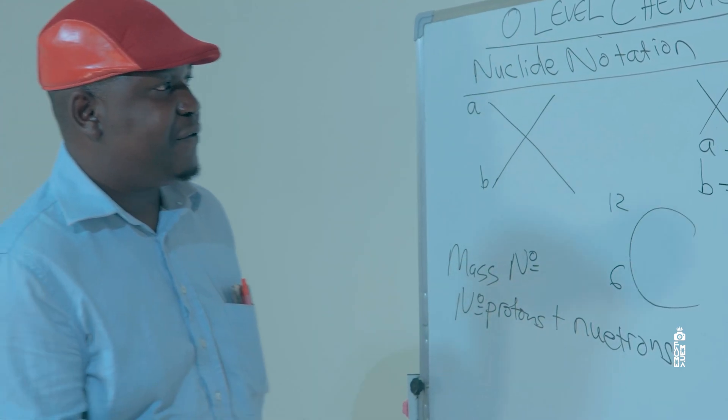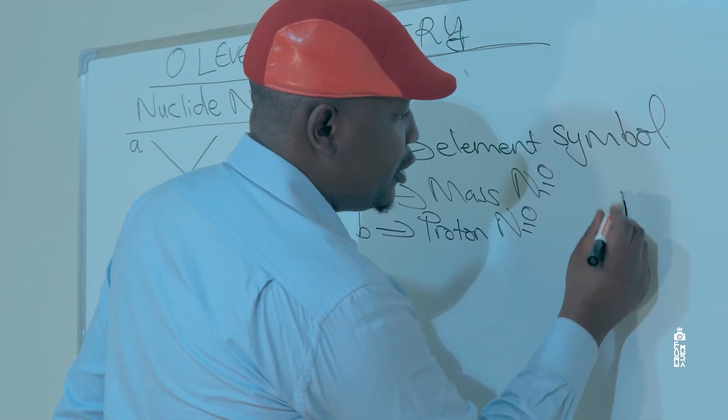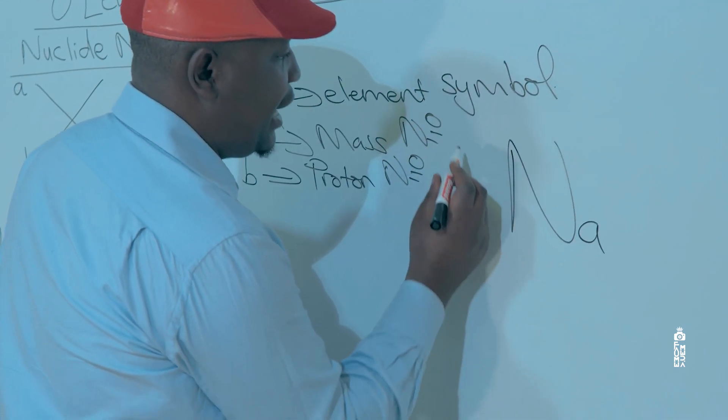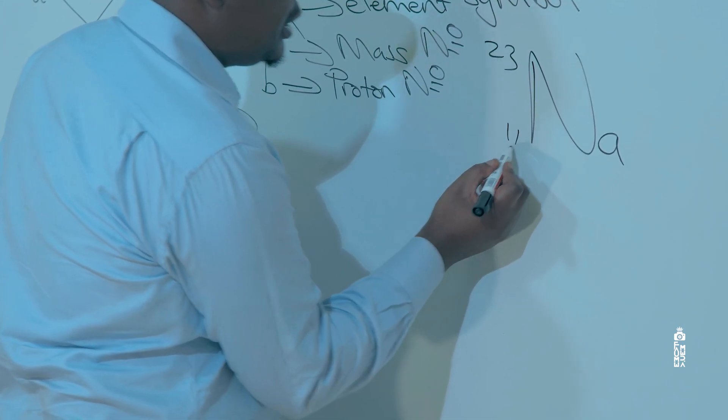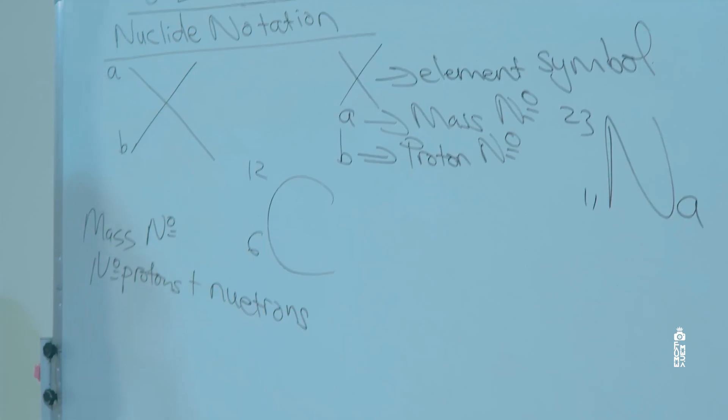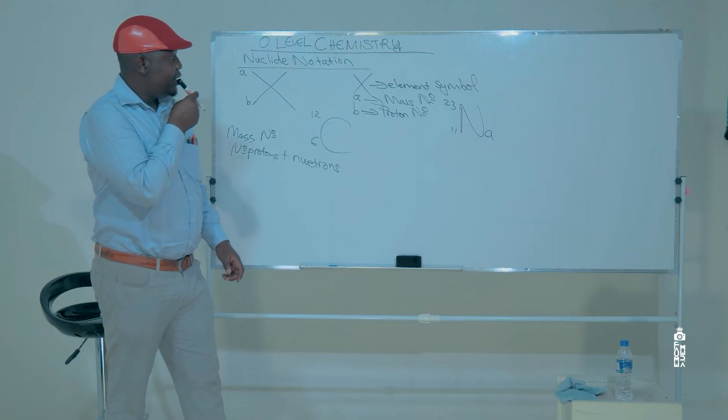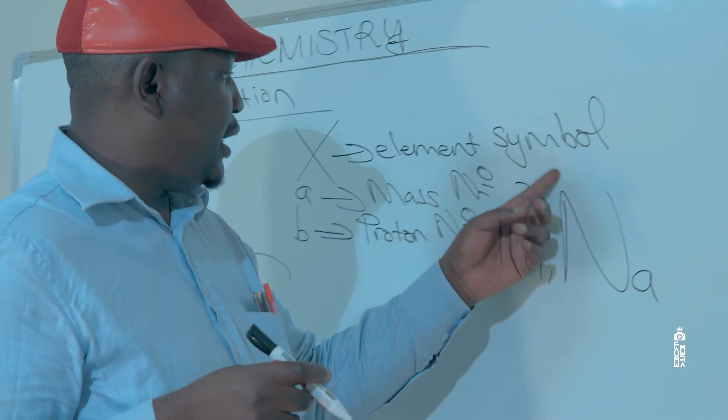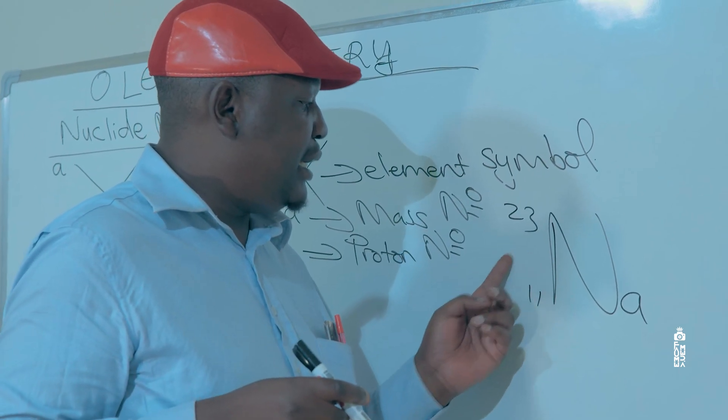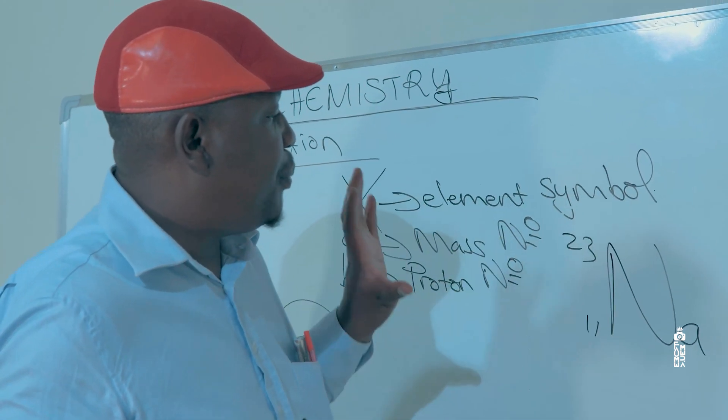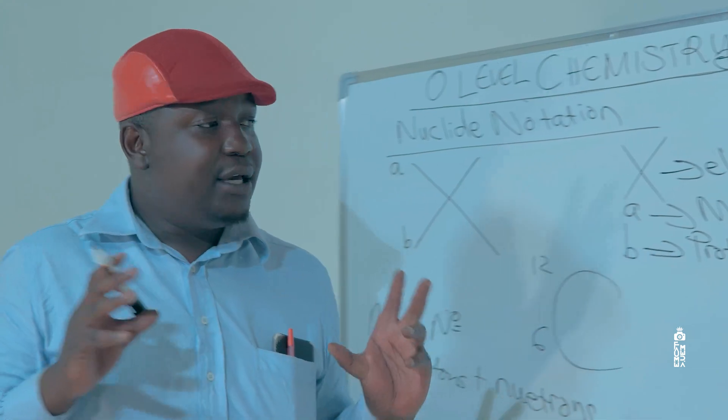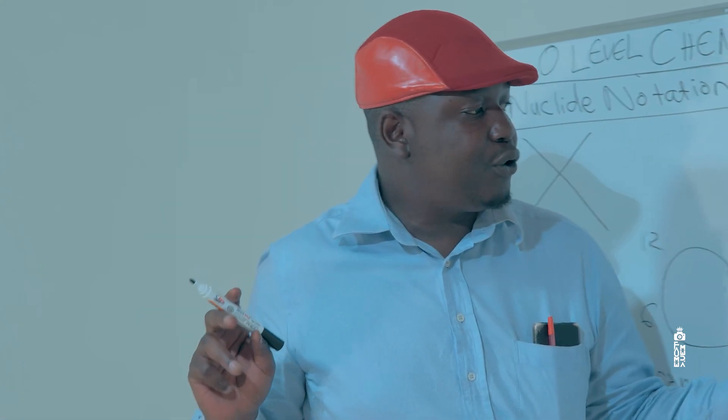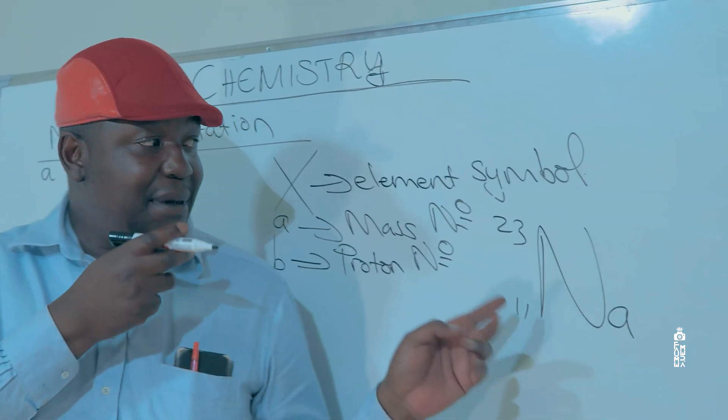Another example, we have sodium. Sodium is represented as Na because in Greek sodium is known as natrium. So sodium is Na. Sodium contains 23 on the mass number, and 11 on the proton number. Meaning to say, sodium has got a proton number of 11 and a mass number of 23.